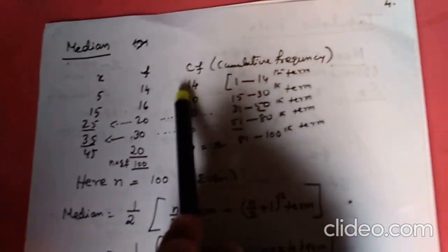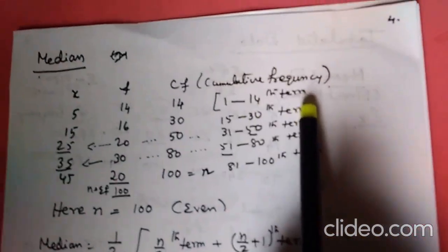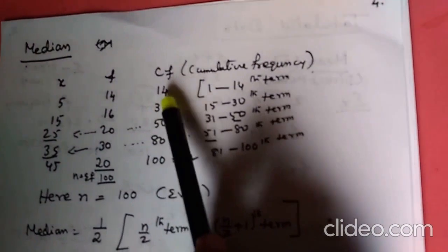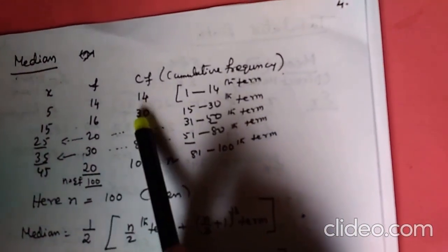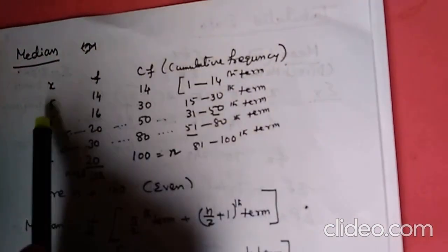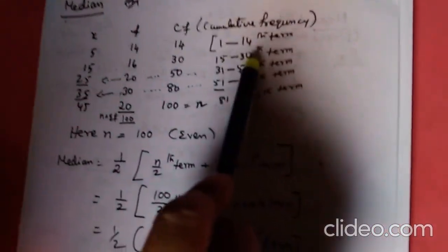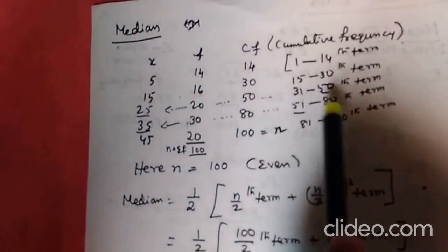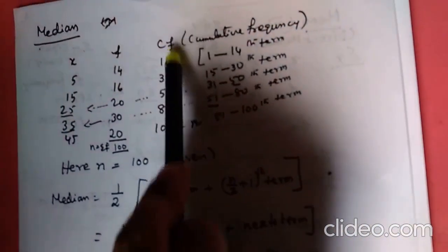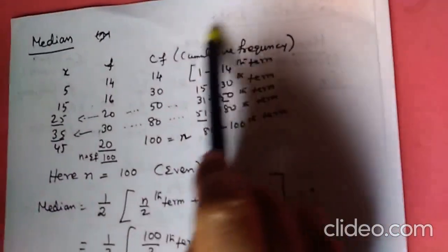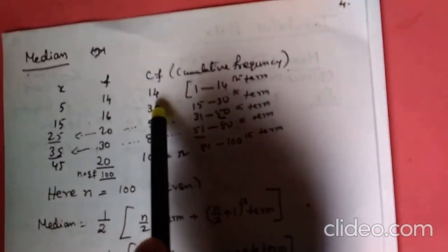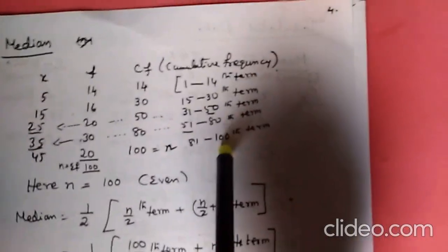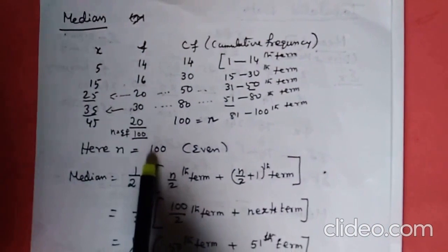The cumulative frequency tells us which terms correspond to which x value: terms 1 to 14 are 5; terms 15 to 30 are 15; terms 31 to 50 are 25; terms 51 to 80 are 35; terms 81 to 100 are 45. This is represented by cumulative frequency — that is why we write it here.